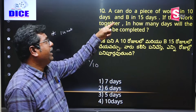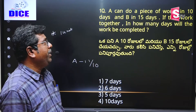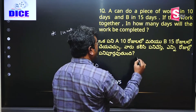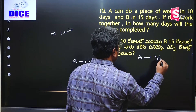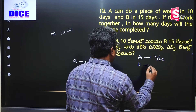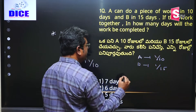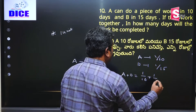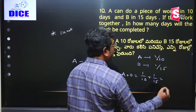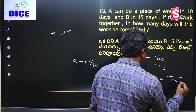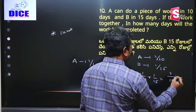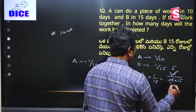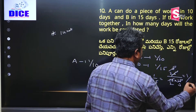Here is the first model: A can do a piece of work in 10 days and B in 15 days. In how many days do they finish working together? A's one day's work is 1/10, and B's one day's work is 1/15. So A plus B's one day's work means 1/10 plus 1/15. The LCM of 10 and 15 is 30, giving 3/30 plus 2/30 = 5/30, which simplifies to 1/6.